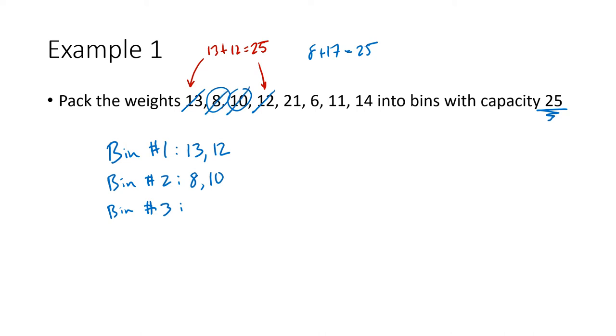A useful thing to keep track of is how much space is left in my bin. So 8 plus 10 is 18, and my whole bin had capacity 25. 25 minus 18 is 7. So 7 is how much space is left in bin number 2.